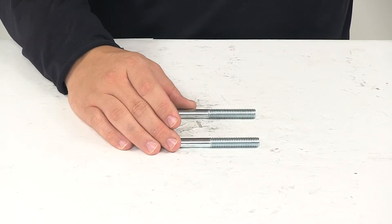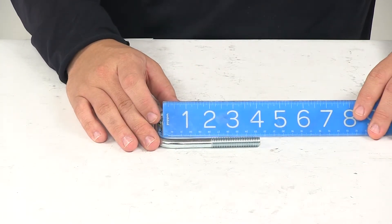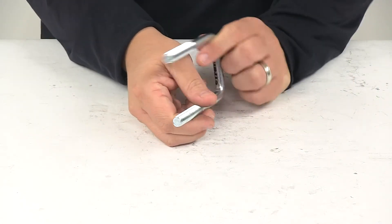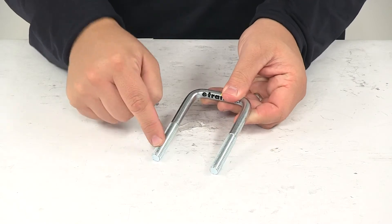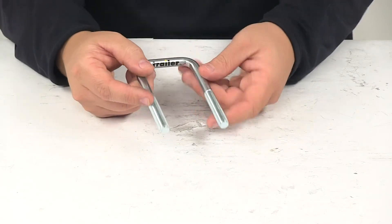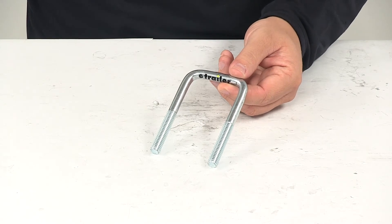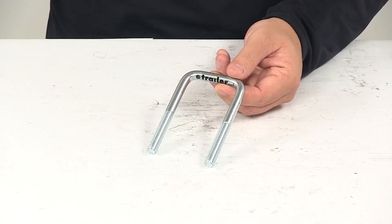The length measurement is taken from the bottom of the U to the end of the threads and measures four inches long. The bolt size, starting with the diameter, is seven sixteenths of an inch. That's the diameter of each post, so the bolt size is seven sixteenths by fourteen. That's going to do it for today's look at the replacement U-bolt for two inch wide square axles.